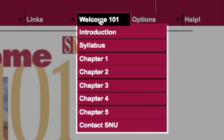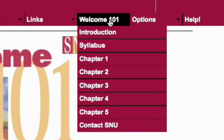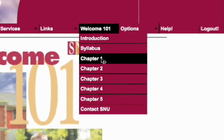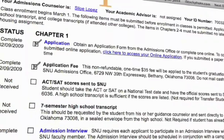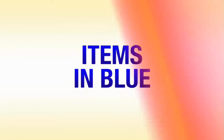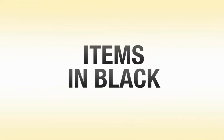If this is your first time here, I'd encourage you to read through the introduction and syllabus so you can familiarize yourself with how the Welcome 101 can really help you out. I've already done that and I'm ready to dive in, so I'm going to go ahead and click on Chapter 1. Once the page loads, scroll down and you'll notice a list of items that need attention. Some are listed in blue, others are in black. The items listed in blue are linked to online forms you can fill out immediately and have sent directly to SNU. The items in black are things you'll need some outside help to complete.